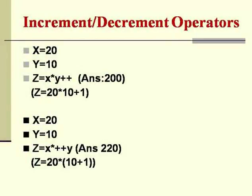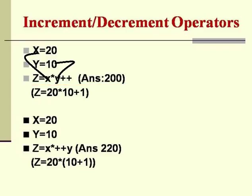Here is an example with 2 integer variables x and y. x holds the value 20 and y holds the value 10. In the third step, we are doing the operation z = x * y++. The value of x is 20 and the value of y is 10, and the increment operator comes after the variable y.